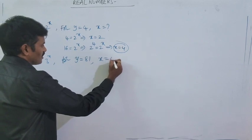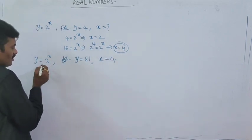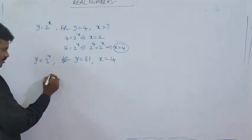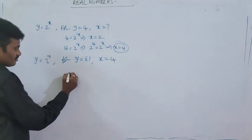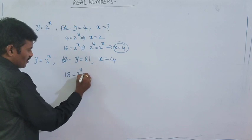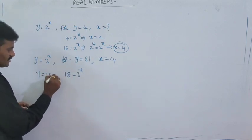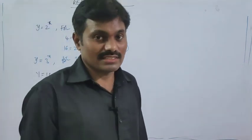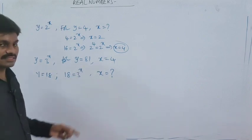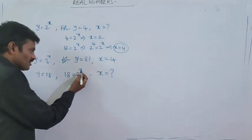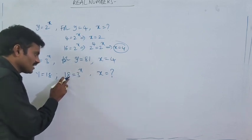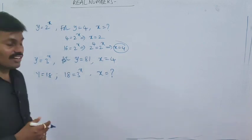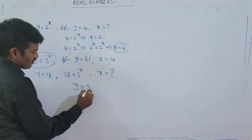When we can write the value of y using the given base, we can find x easily. But if instead of 81, I take y equal to 18 — that is, 18 is equal to 3 to the power x — can we guess the value of x? Is it possible to write 18 as base 3 for any power? It is not possible. So how do we find the value of x? There must be some other relation between x and y.